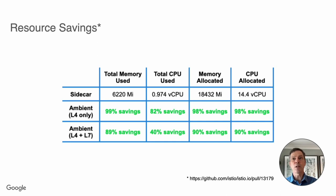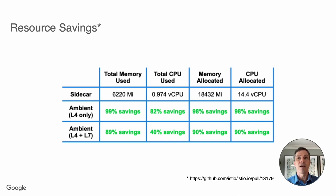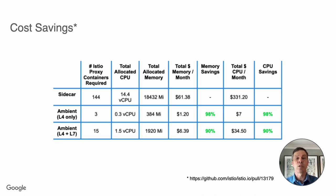Across a cluster, Ambient Mesh uses less memory and CPU than sidecars. It is also no longer necessary to make complicated resource reservation calculations, which makes Istio easier to deploy, and it frees up node-level resources, since each pod doesn't need to allocate a proxy to handle its potential peak usage. This translates directly into cost savings of 90% or more.